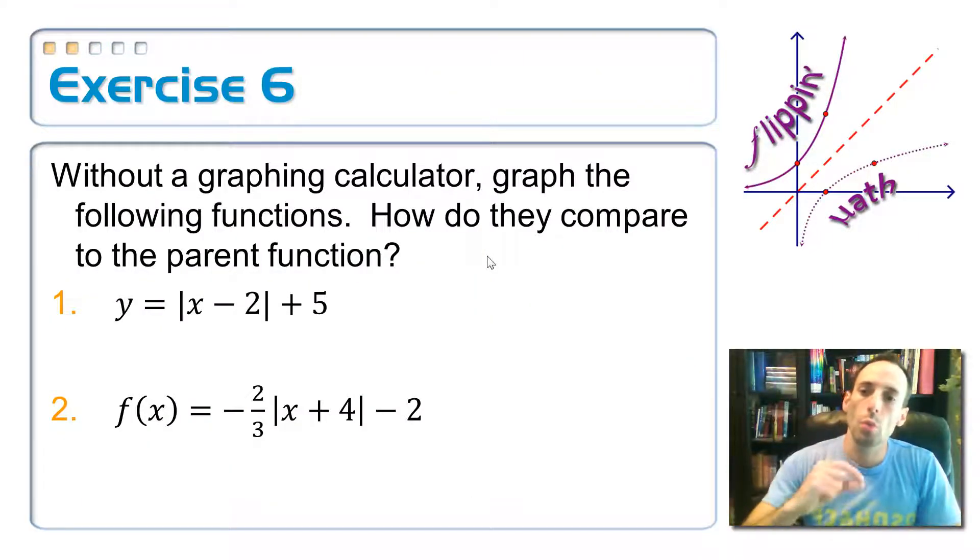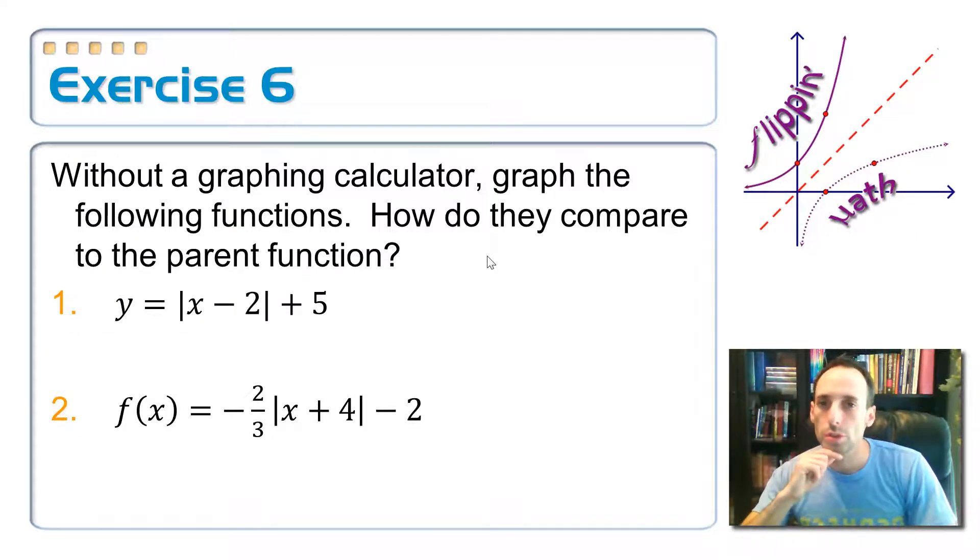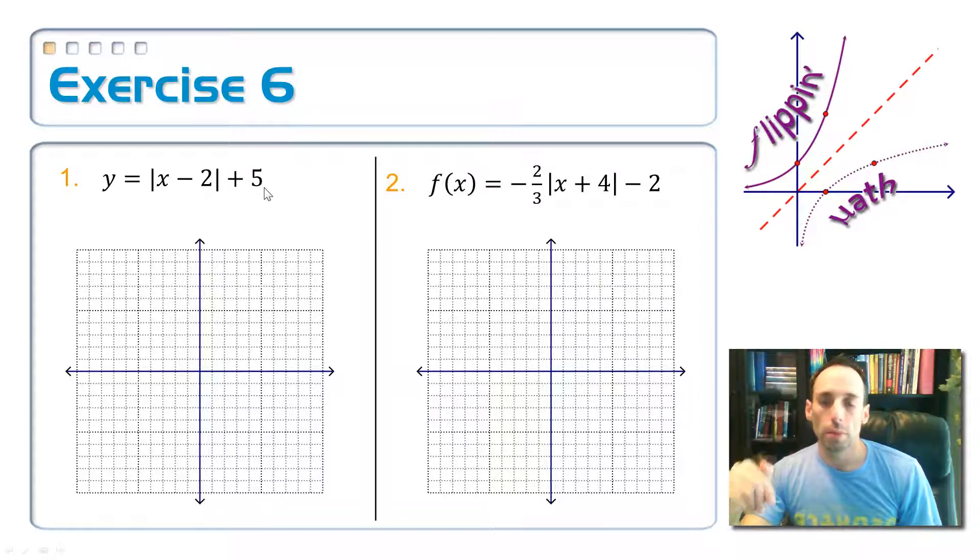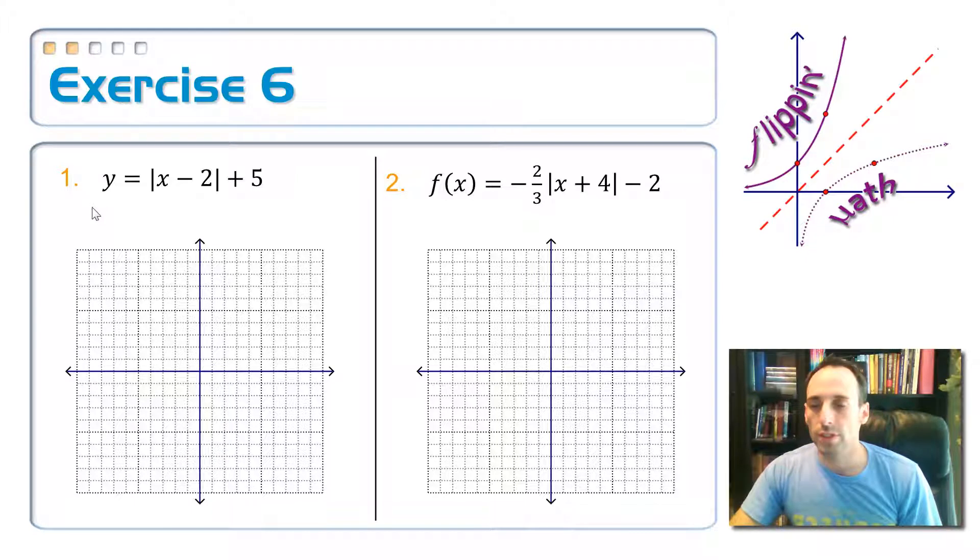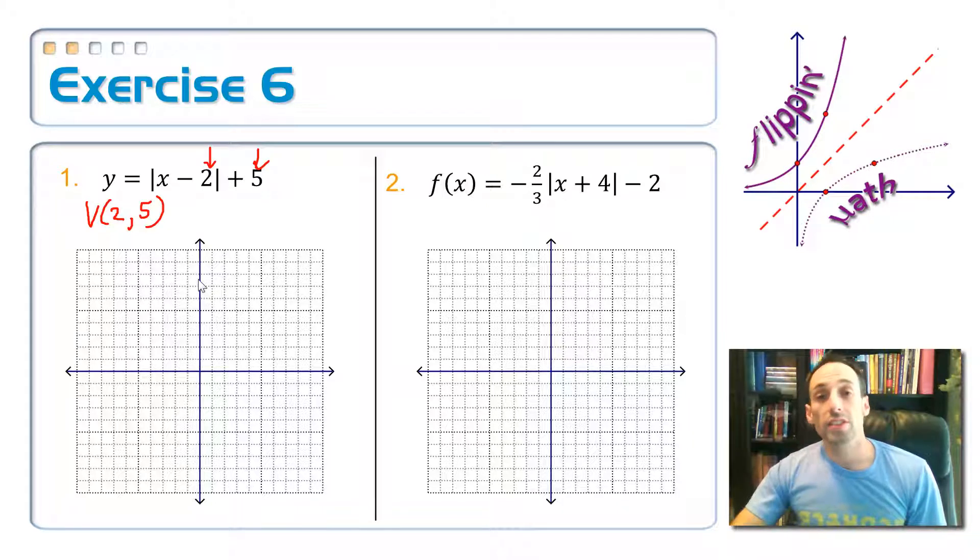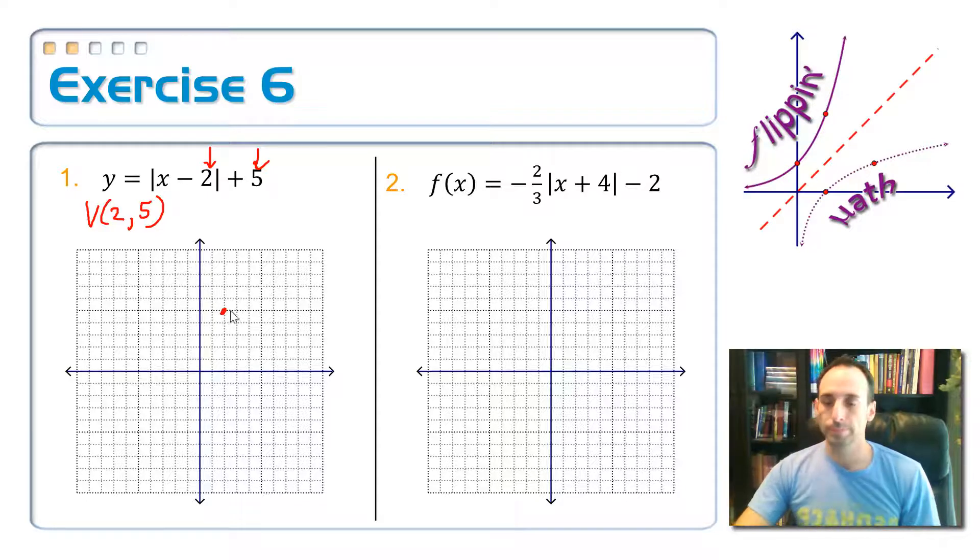We're going to graph number one together, and then I'm going to have number two you do by yourself. And I want to also be able to compare it to the parent function. So let's take that number one there where it says y equals absolute value of x minus 2 plus 5. Whenever I go to graph this thing, my vertex is at the point 2, 5. That thing lies. That thing does not lie. So that's the first step. I'm going to find that vertex. I'm going to plot that as a point 2, 5. I'm going to put a dot.